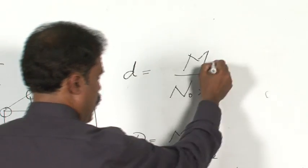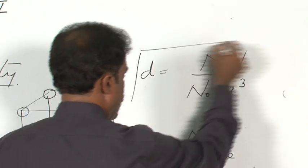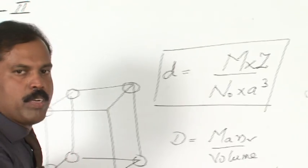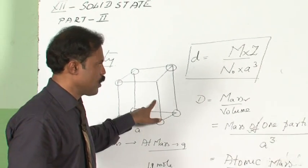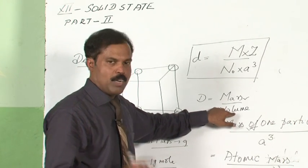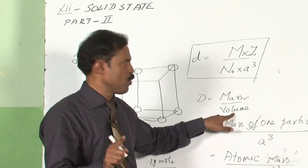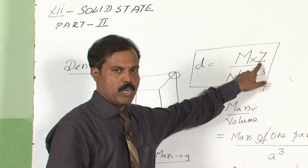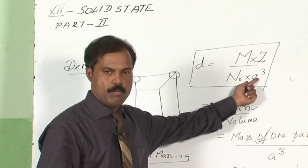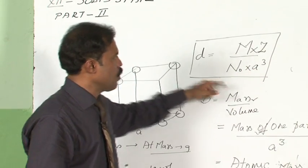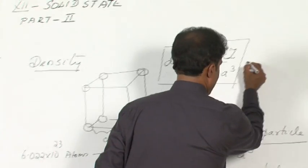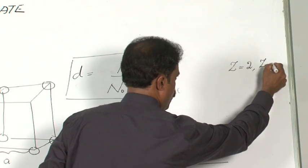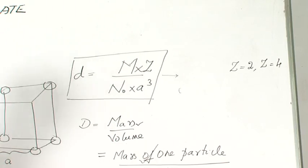This is the density for simple cube with a single particle (z = 1). In general, density = z·M / (N₀ · a³), where z is the number of effective particles. In simple cube z = 1, in BCC z = 2, and in FCC z = 4. The calculation method is the same for all.